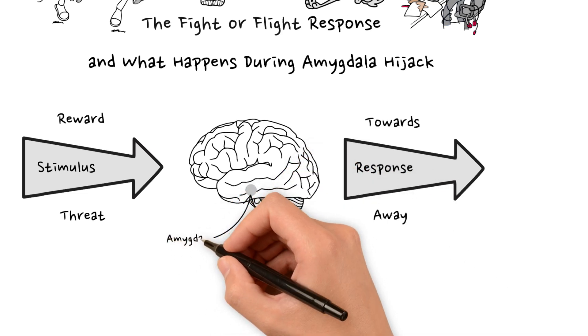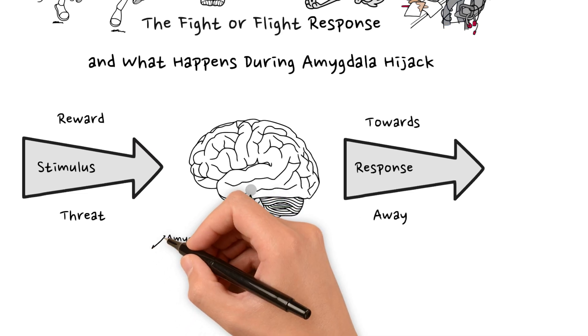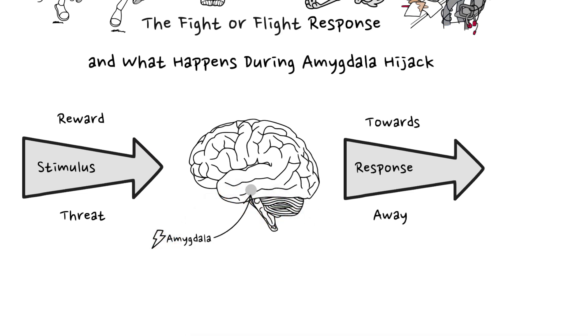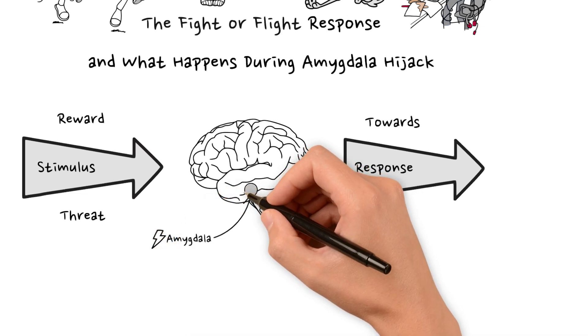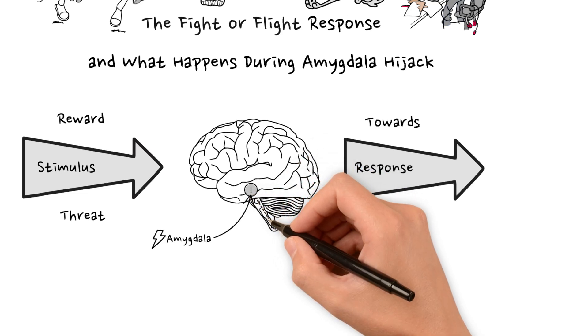This is where the term amygdala hijack comes in, as it is where one part of the brain overrides the functions of other parts of the brain, as it pumps stress hormones into the body.